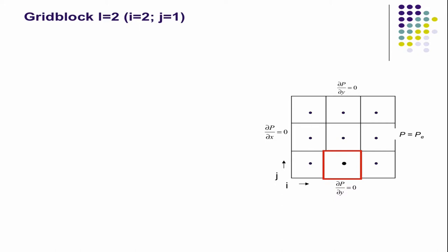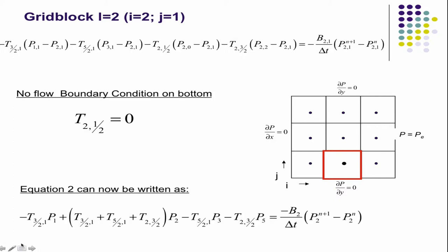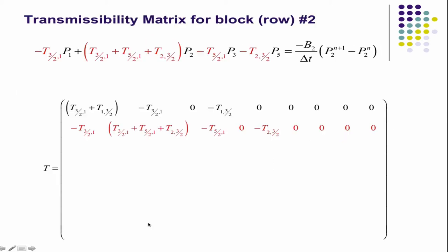Now we'll look at I equals two. No flow on the bottom. And to compute the transmissibilities across here, here, and there. There's the total mass balance. This transmissibility term is zero. This guy is zero because there's no flow here. And so eventually you get this equation. And you plug that into the transmissibility matrix and you get that.